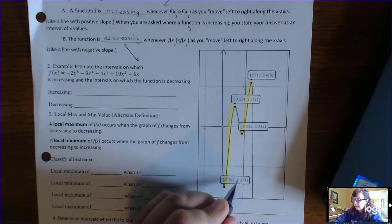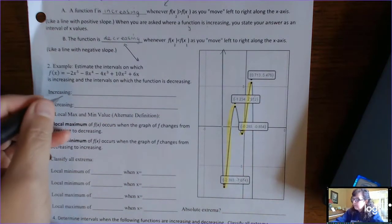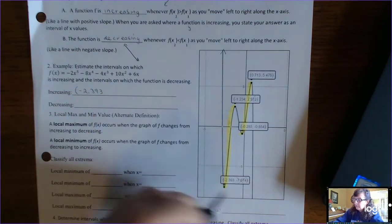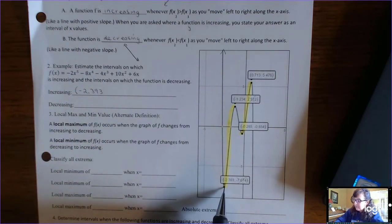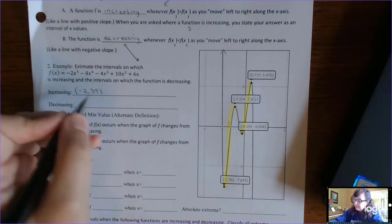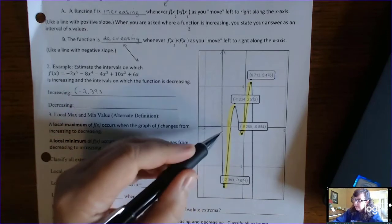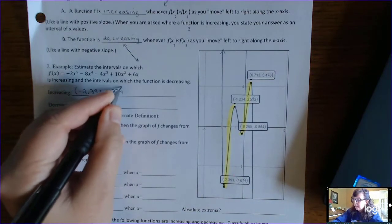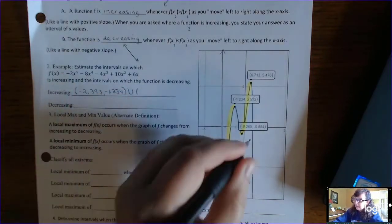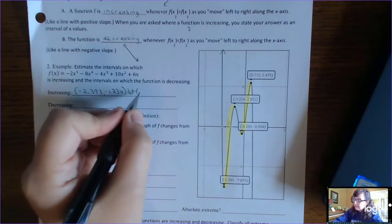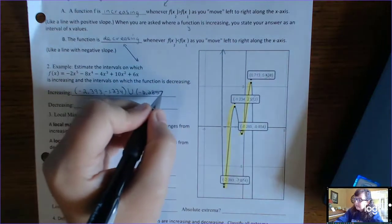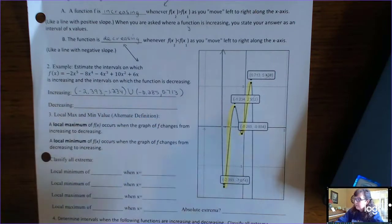Just ignore the y-values — you might even cross them out. The function is increasing from parentheses negative 2.393 — this x-coordinate here — and you don't include the endpoint because technically it's neither increasing nor decreasing at that point because it's changing. So we use parentheses. From x = negative 2.393 to x = negative 1.234, union parentheses negative 0.285 all the way to x = 0.713. These are all x-values where the function is increasing.